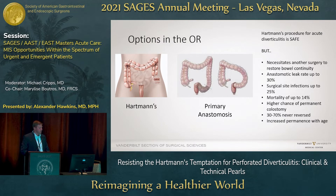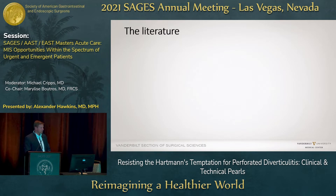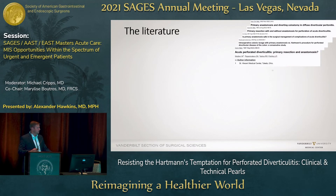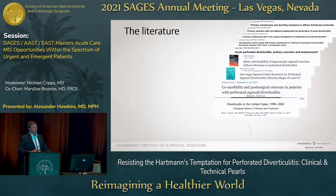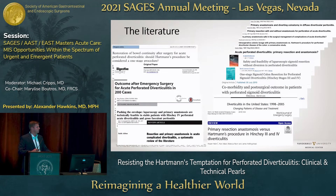30 to 70% will never be reversed and live their life with an end colostomy, with increased permanence with age. So what data do we have to guide us? Starting off, as is the case in the literature, there's a lot of single-center retrospective data showing it's safe to do single-stage primary anastomosis for perforated diverticulitis.